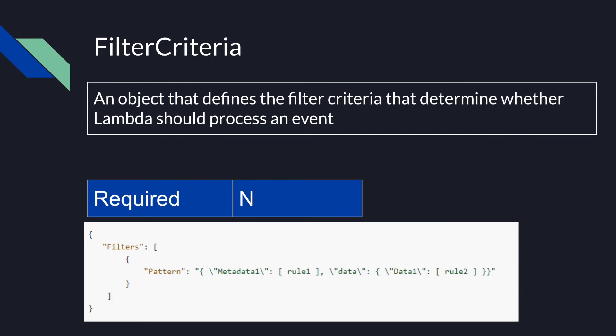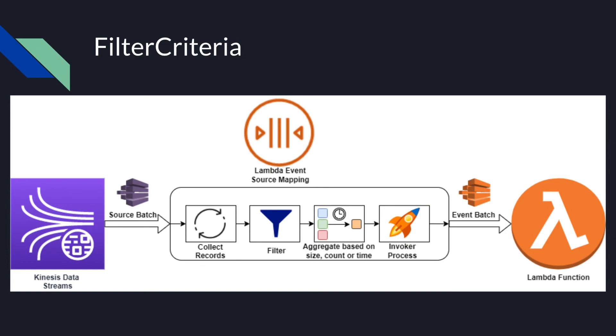Filter criteria allows the consumer to filter events before the Lambda invocation, filtering messages before the function is invoked. This helps reduce requests to your Lambda functions, may simplify code, and can reduce overall cost. It's not a required parameter and accepts a list of filters — up to 5 filter patterns by default. You can filter by metadata fields such as partition key, or by data fields in your record payload. The event source mapping filters messages before batching, and filtered messages are treated as successfully processed, advancing the iterator past those records.